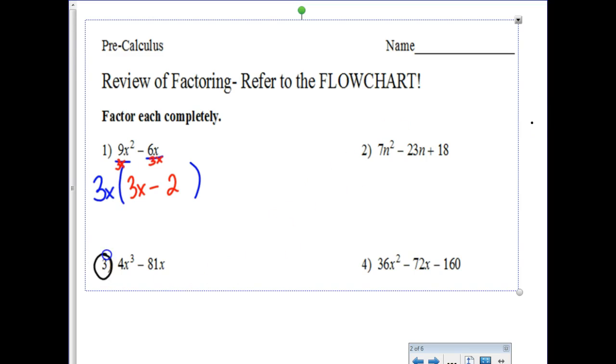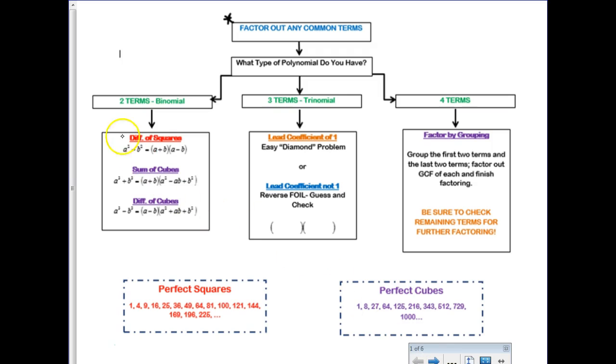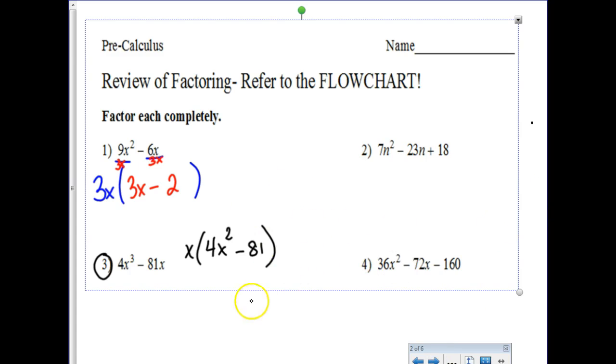So back in Algebra 2, we used to call this undistributing, but we're factoring out a 3x. And think about what's left when you divide both of these by a 3x. We still have a 3x - 2. And of course, these are the ones where you could redistribute it to double-check that you haven't done anything weird. And this is a case where, when you factor out the common term, that is all the factoring you can do in that example. So you're done. But when I look at number three, we're still going to factor out the common term. There's no numerical common term here, I don't think, but there is a common term of x that we could take out.